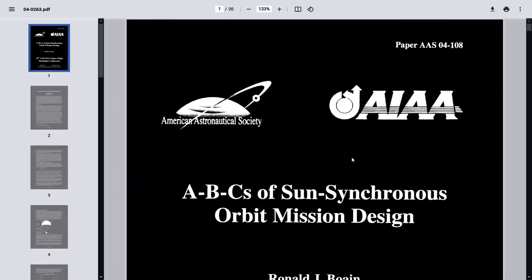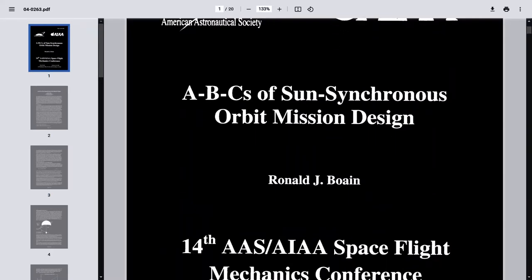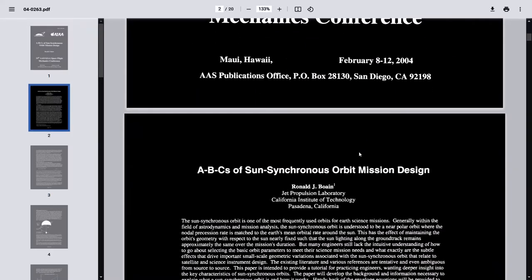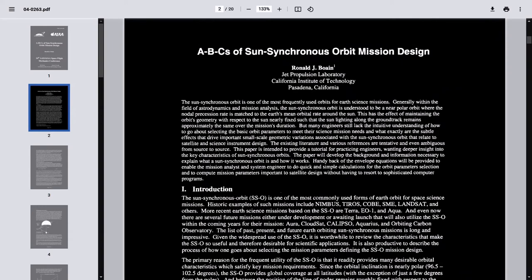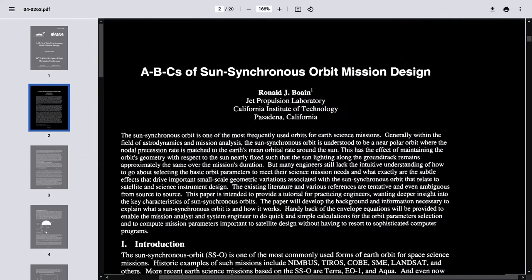So this video is heavily based on this paper called the ABCs of Sun-Synchronous Orbit Mission Design by this guy, Ronald J. Bowen. He is from JPL, the Jet Propulsion Laboratory. So whenever I talk about anything they're going to talk about in this video, I'm going to be referencing this paper, because this is a great paper and goes into much more detail than I will in this video. So if you want to read more details, more derivations on the equations that I'll be showing, be sure to check this out, and I'll leave a link in the description to this paper.